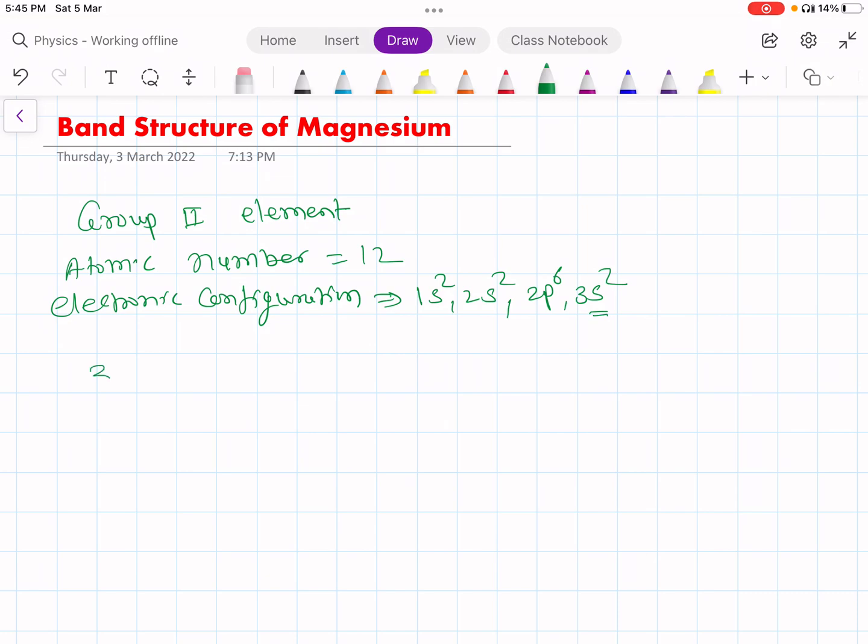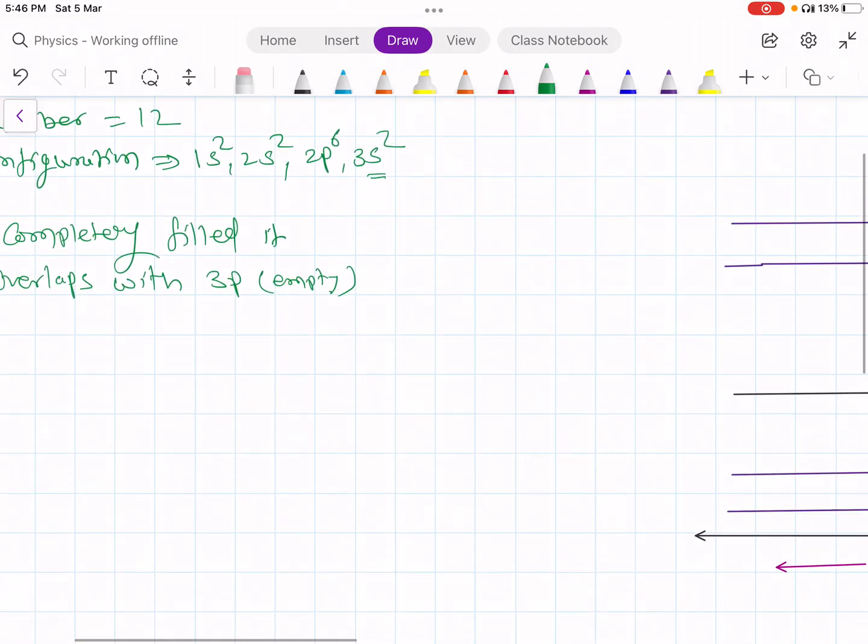So in this case what happened? Even though this 3s2 is completely filled, it overlaps with 3p. 3p is empty and that is why it is a good conductor of electricity.